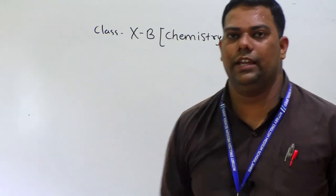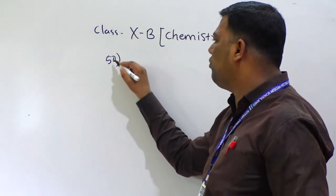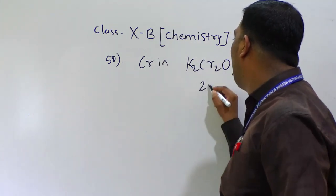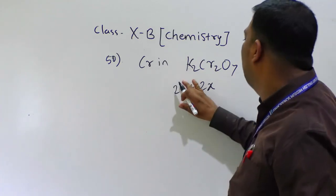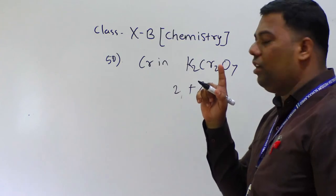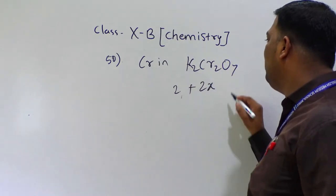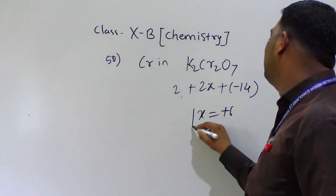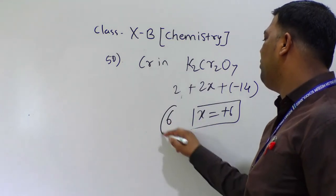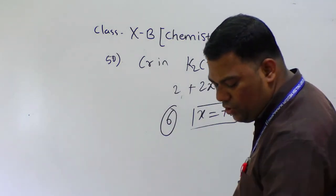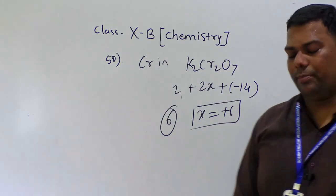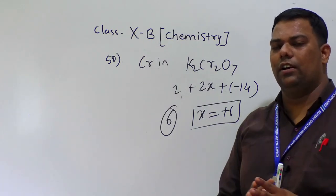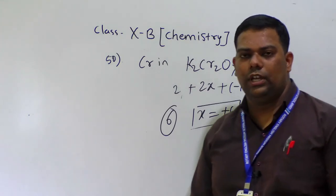Question number 50: the oxidation number of chromium in K₂Cr₂O₇. Potassium is plus one times two equals plus two. Oxygen is minus two times seven equals minus fourteen. So two plus two x minus fourteen equals zero, therefore x equals plus six. Type only 6 to get marks. These are today's IIT paper discussion questions on chemical reactions and equations. I hope you understood all the questions with solutions. If you still have doubts, feel free to ask. Thank you very much.